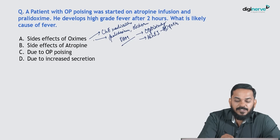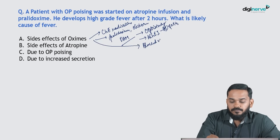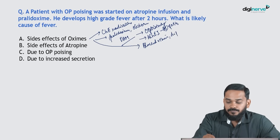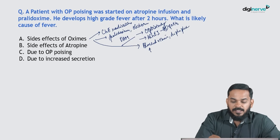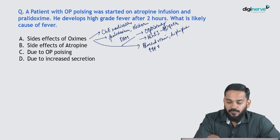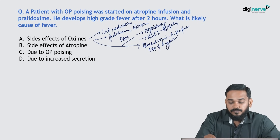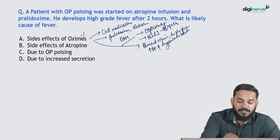The major adverse effects of oximes include blurred vision, diplopia, increased blood pressure, and hyperventilation — fever is not among them. So the option attributing fever to oximes is wrong.